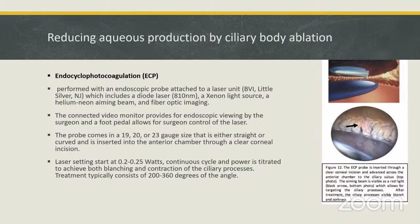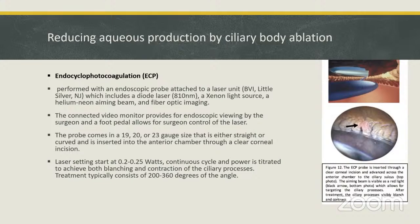The last method is reducing aqueous production by ciliary body ablation — endocyclophotocoagulation (ECP). It is performed with an endoscopic probe attached to a laser unit, which includes a diode laser at 810 nanometers, a xenon light source, a helium-neon aiming beam, and fiber-optic imaging. A connected video monitor provides endoscopic viewing and a foot pedal controls the laser. The probe comes in 19, 20, or 23 gauge sizes, straight or curved, and is inserted into the anterior chamber through a clear corneal incision. The laser setting starts at 0.2 to 0.25 watts on continuous cycle, with power titrated to achieve blanching and contraction of the ciliary processes. Treatment typically covers 200 to 360 degrees of the angle.